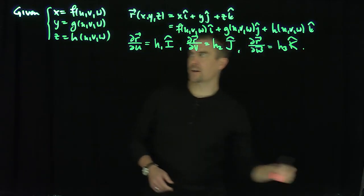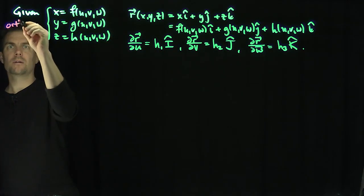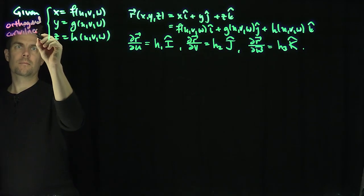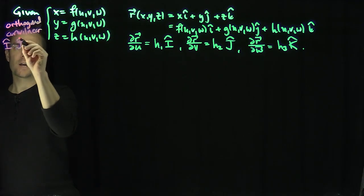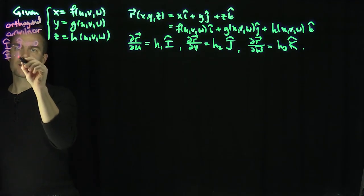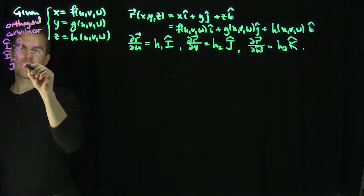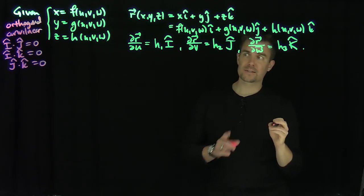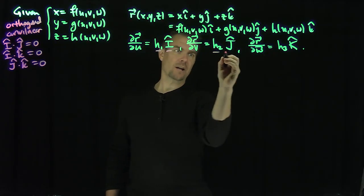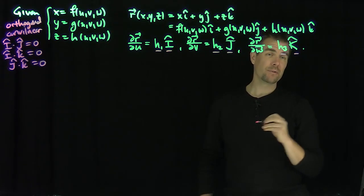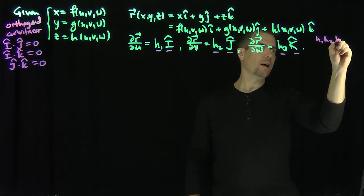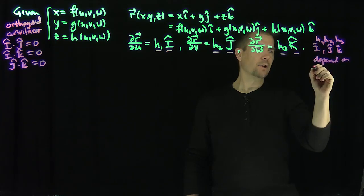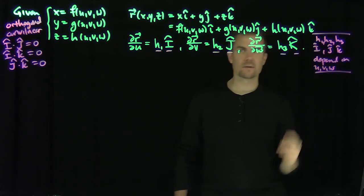We've called this system orthogonal curvilinear coordinates. It is orthogonal curvilinear if î · ĵ = 0, î · k̂ = 0, and ĵ · k̂ = 0. The key thing to remember is that every expression — h₁, h₂, h₃, and the unit vectors î, ĵ, k̂ — all depend on u, v, and w. So they're actually functions of u, v, and w.